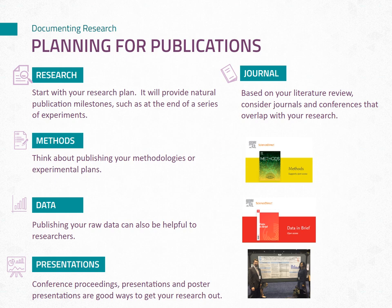Did you obtain any interesting preliminary results or plan on conducting a scoping study? Even your literature review can become a publication known as a systematic review. This type of review breaks down the existing literature and highlights its importance. For methods and data, consider publishing them in full in separate journal publications. Publishers ScienceDirect and Elsevier offer dedicated journals for methods and data, allowing for cross-referencing with your main journal article. Publishing your raw data in full and providing detailed methods can greatly benefit fellow researchers who aim to understand, replicate, or build upon your research, and enables others to use it as a benchmark for their own results.